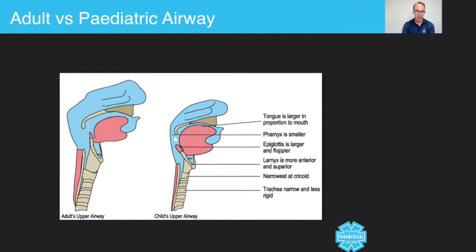The epiglottis is larger and floppier. So in other words, the epiglottis that covers the trachea and stops anything apart from air going into the trachea is actually larger and floppier. So let me show you that.